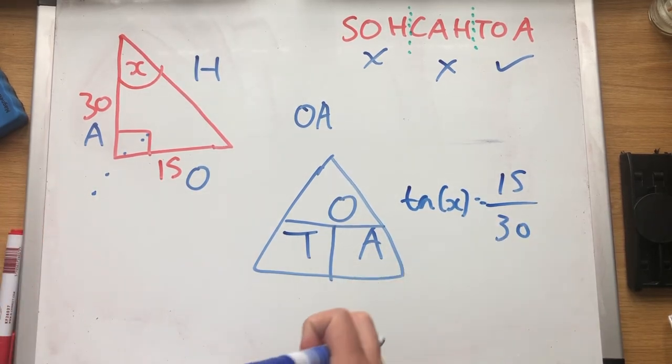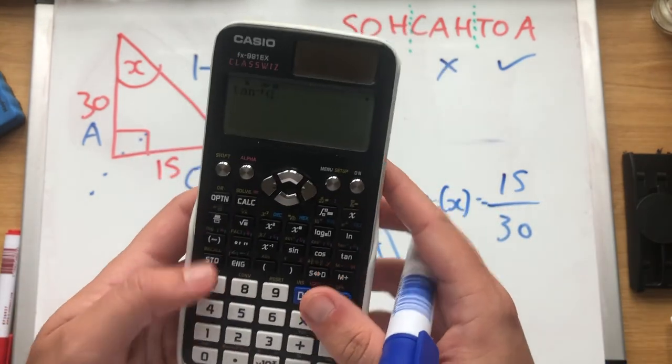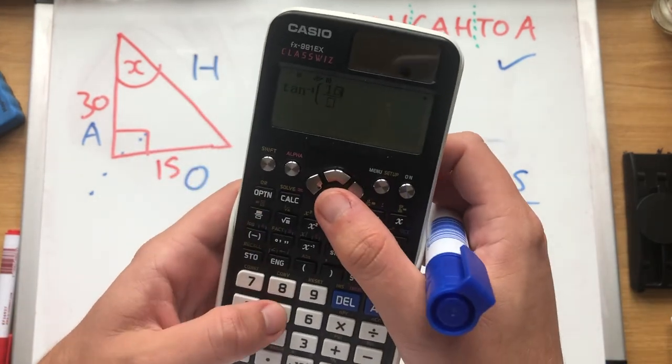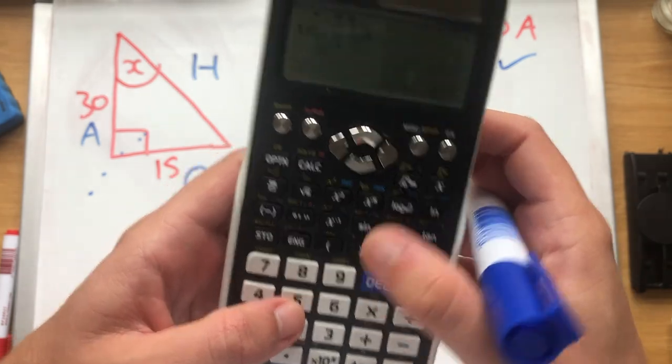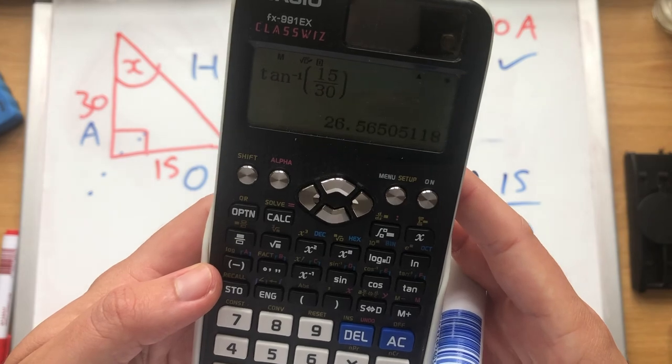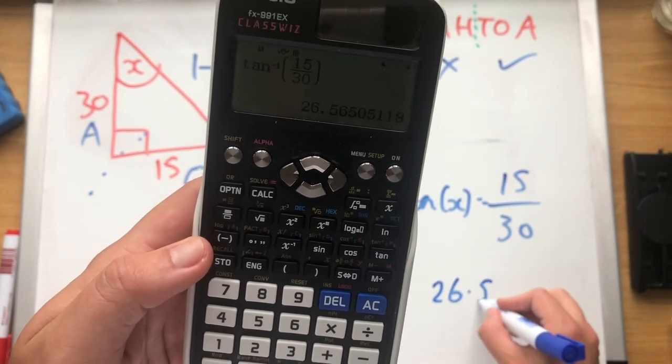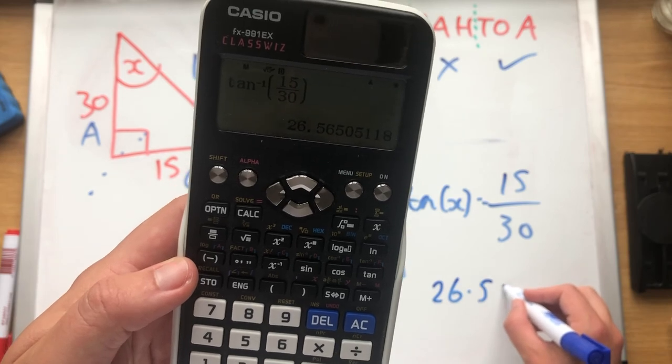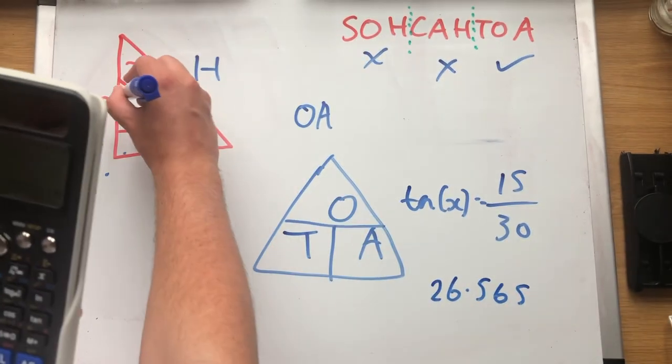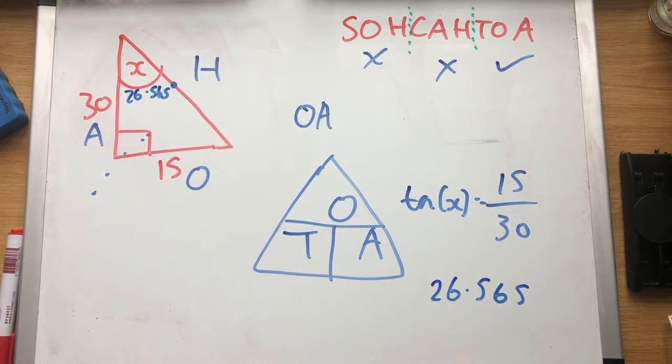It doesn't ask us what tan x is. It asks us what x is. So to fix this, tan to the minus 1, 15 over 30. Oopsie daisy, 15 over 30. And our answer, 26.5. Let's leave it as 565. So our angle here, 26.565 degrees. Okay.